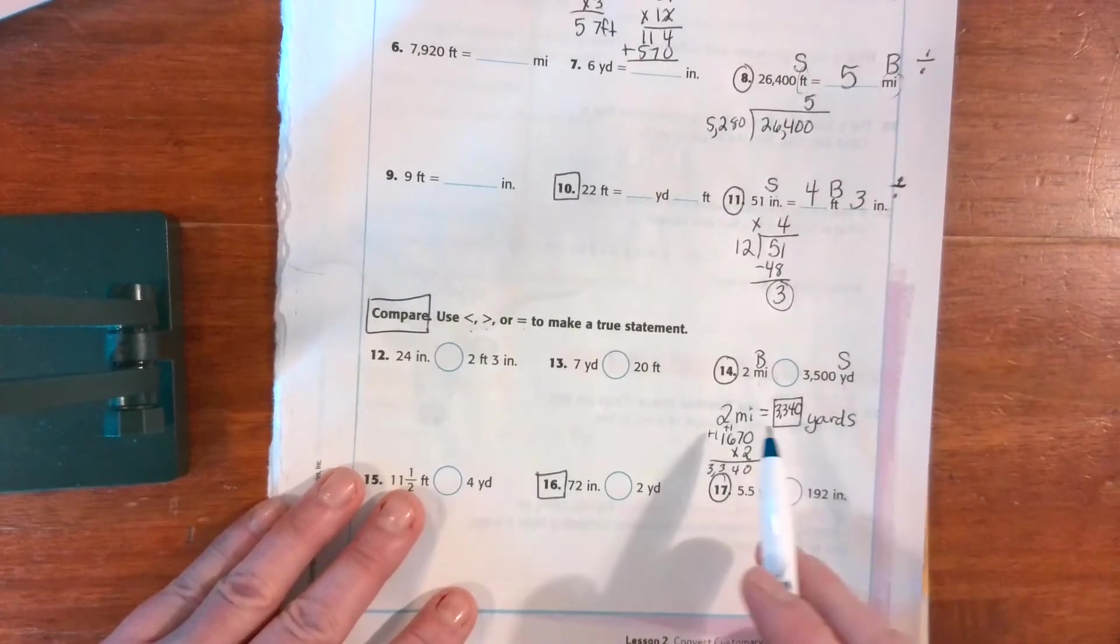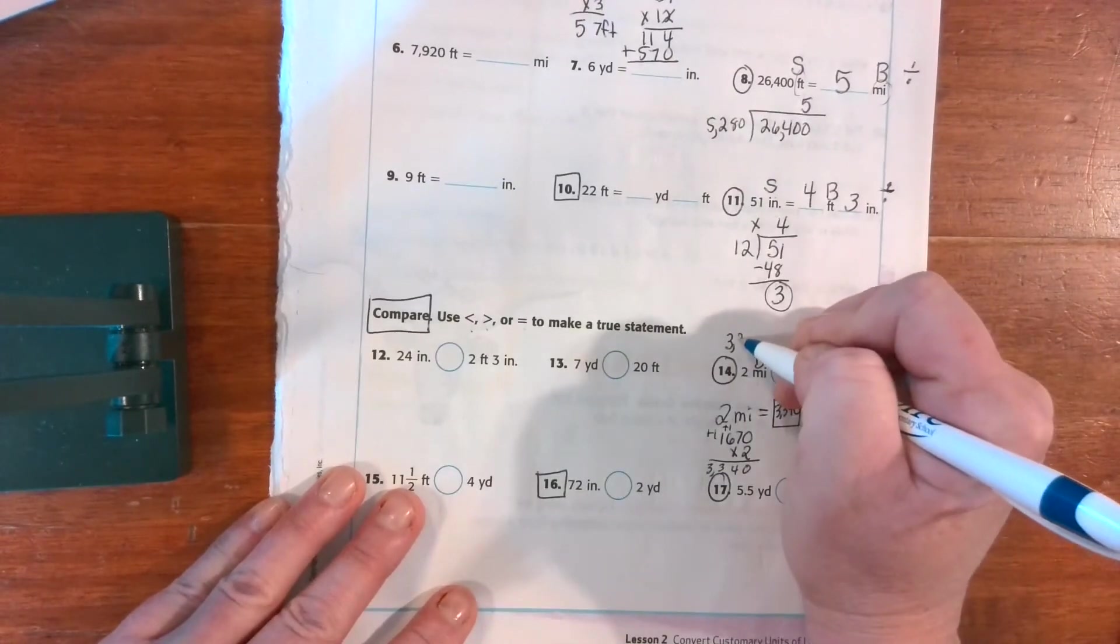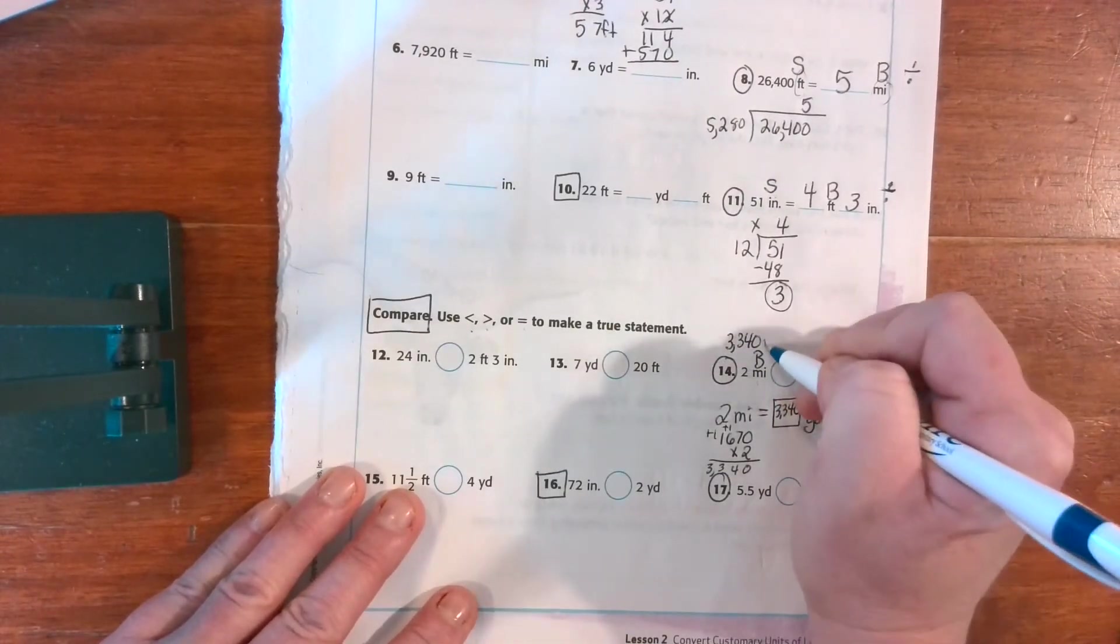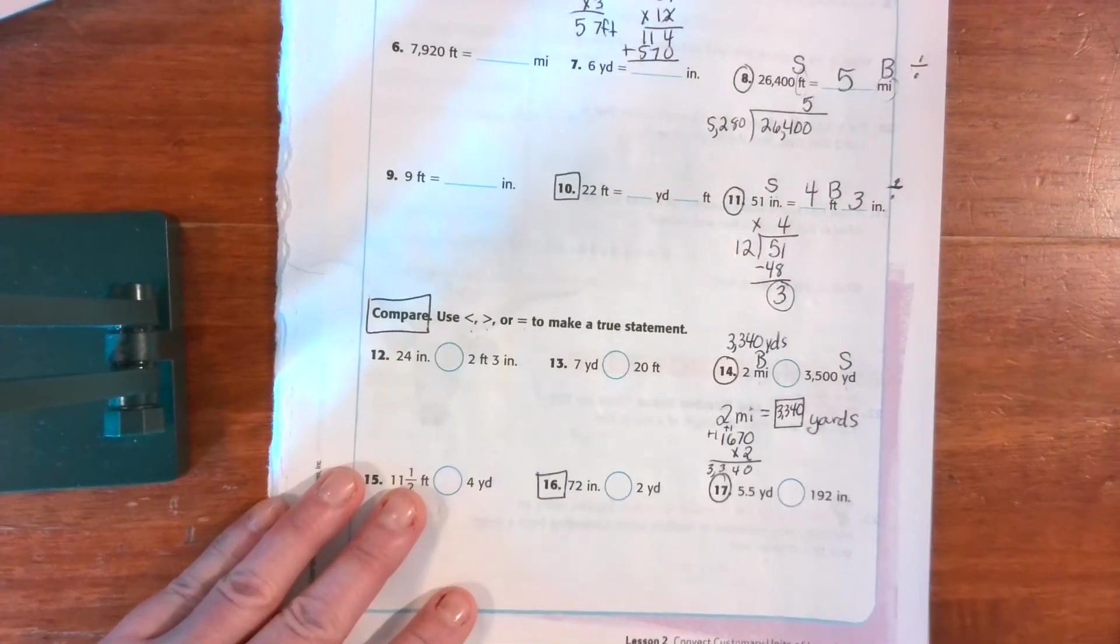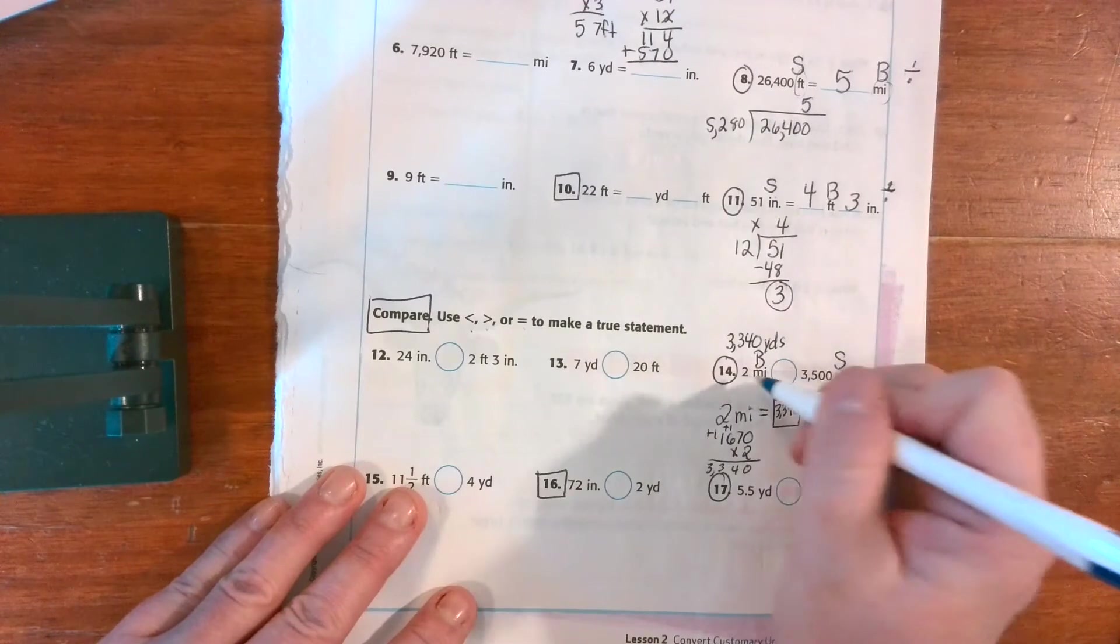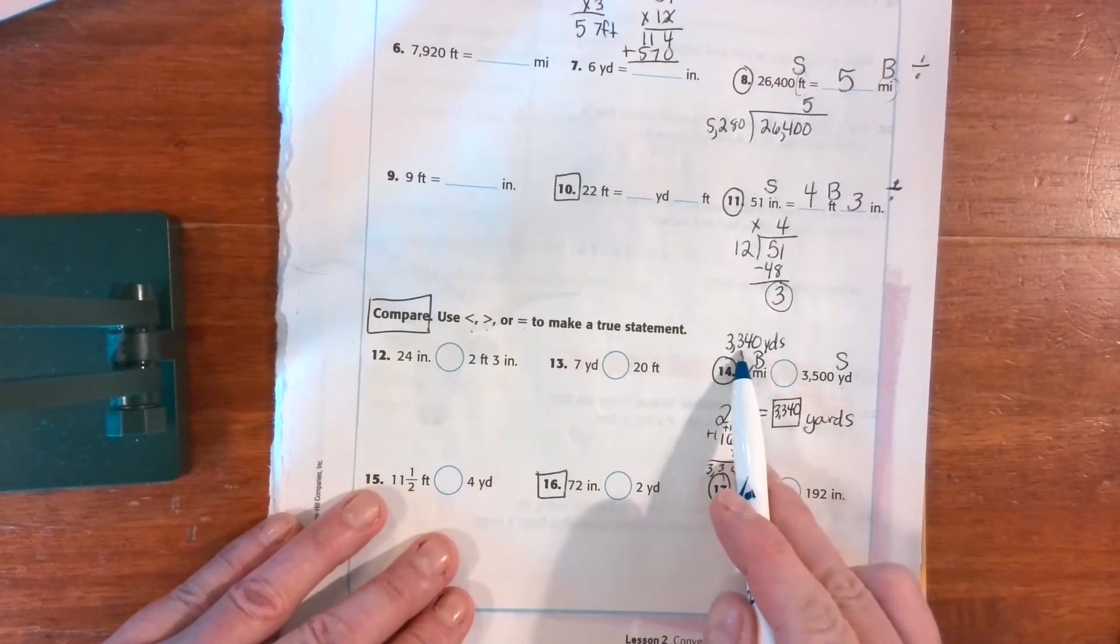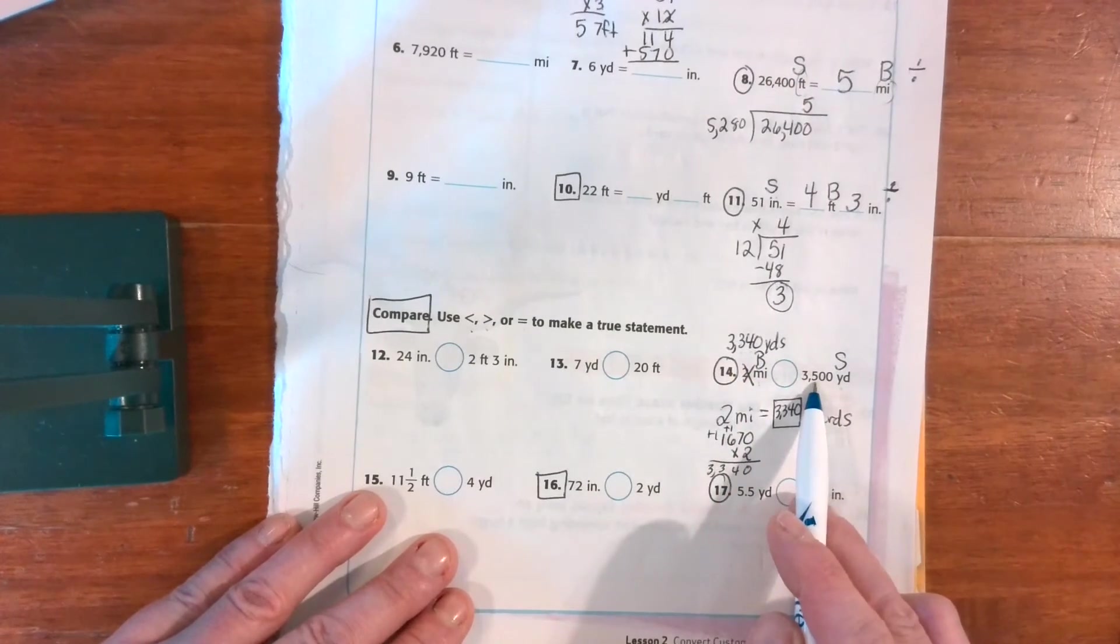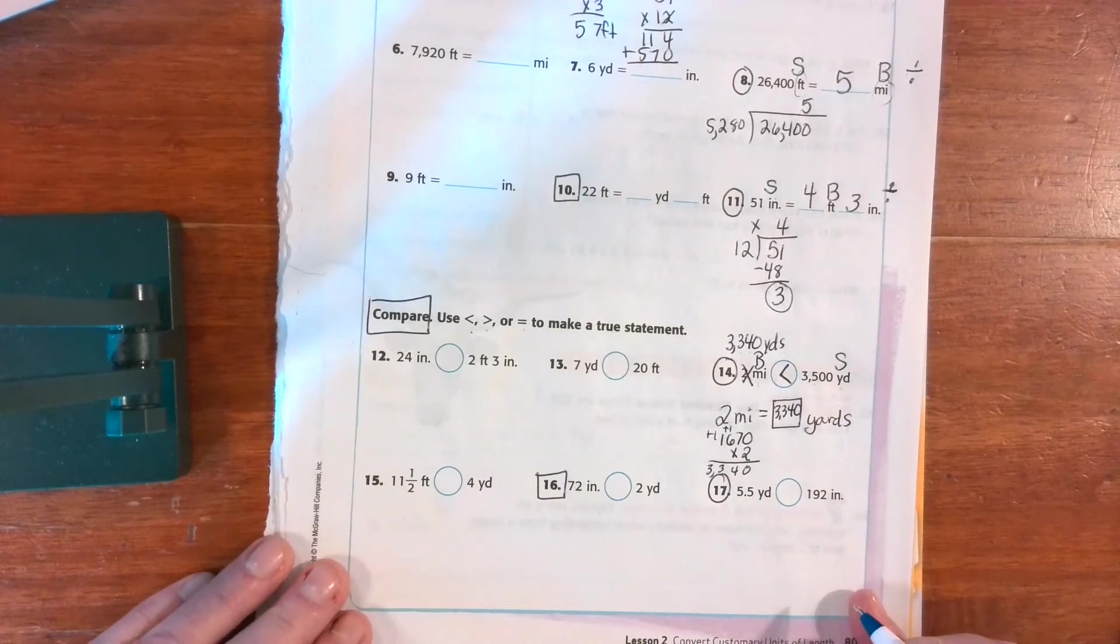All right, so I only converted one. I went miles. So this is equal to three thousand three hundred forty yards. You don't have to write this out. I'm just doing it to kind of show you what we did. We don't have to convert both. You only have to convert one. And is three thousand three hundred forty bigger or smaller than this number? It is smaller. So it is less than.